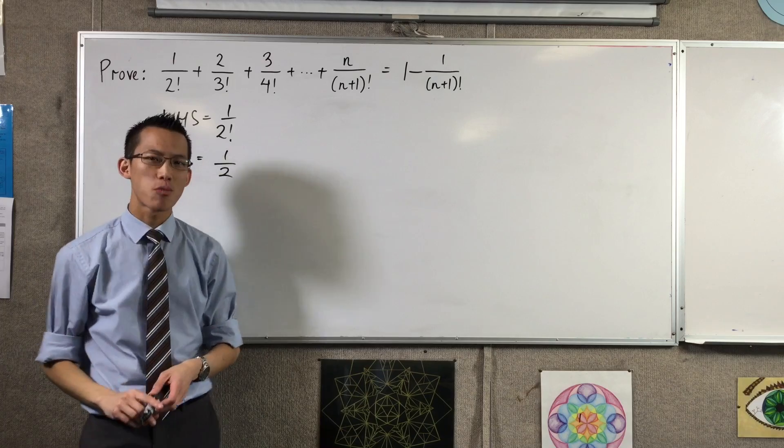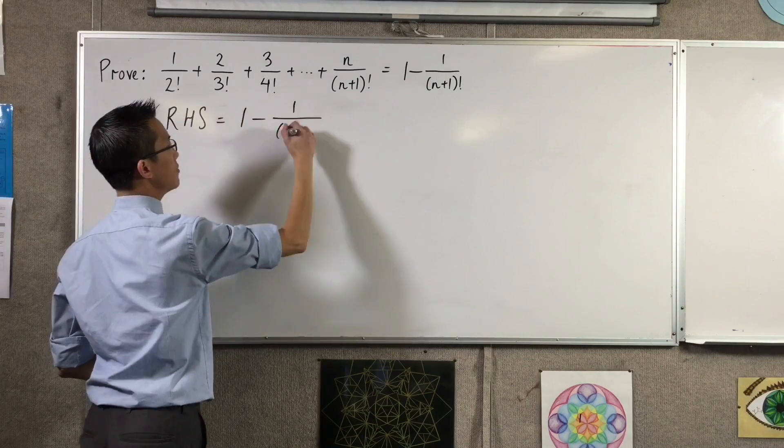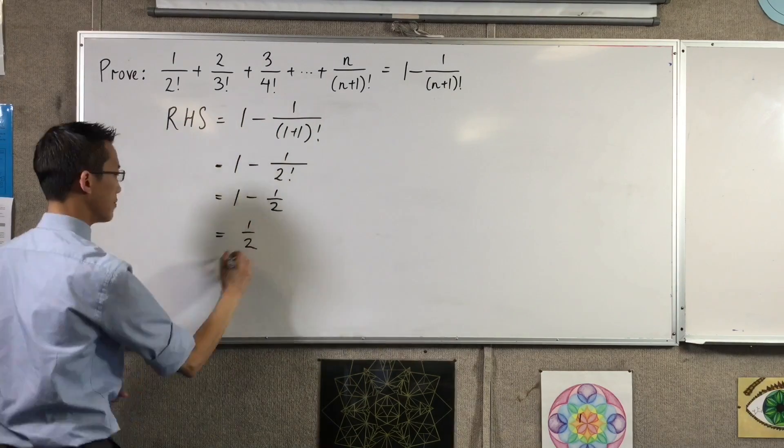Now we can try the right-hand side, and going through the substitution shows that we get exactly the same result. That means our test succeeded, and we can move on to the next stage, assume.